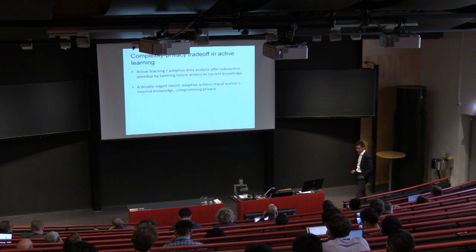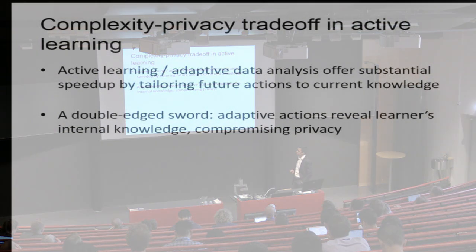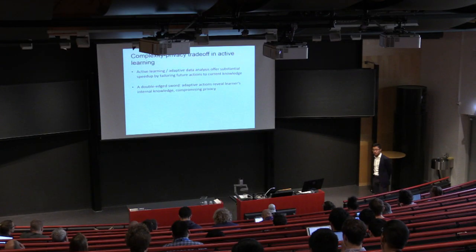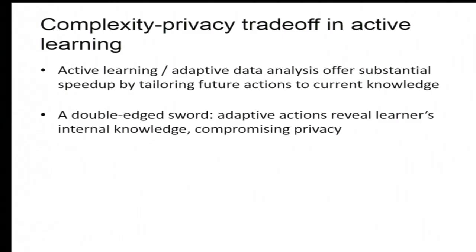Privacy has surfaced quite a bit in this session, and I just want to start by reminding everyone here that adaptive learning is good. Why it's good? Because it brings substantial gain by tailoring future actions of your learning to what you learned in the past, so you don't waste time asking useless questions. But unfortunately, it's a double-edged sword in the sense that, by definition, such adaptive actions reveal the internal knowledge I have, because I would have done something differently if I had known something differently. And that naturally raises privacy concerns.